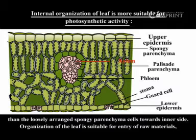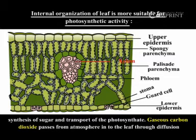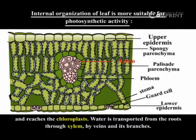Organization of the leaf is suitable for entry of raw material, synthesis of sugar, and transport of photosynthetic products. Gaseous carbon dioxide passes from the atmosphere into the leaf through diffusion and reaches the chloroplasts. Water is transported from the roots through xylem by veins and their branches.